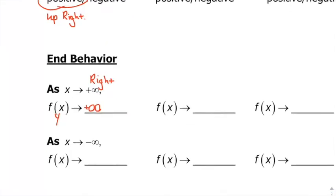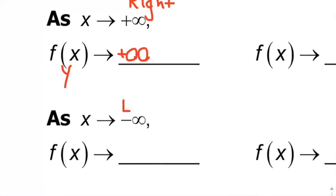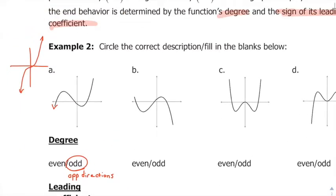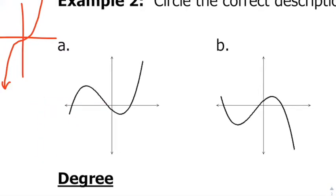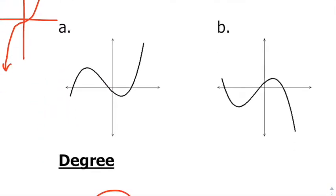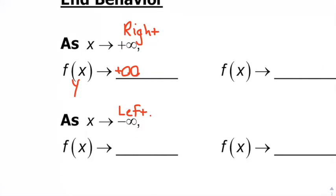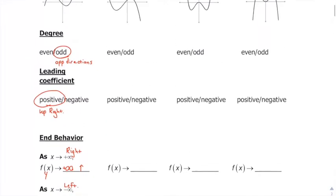As the graph goes towards negative infinity — moving to the left — notice the graph is going down. So we say the y values approach negative infinity. That's basically the graph goes down. And that's what you do for end behavior.